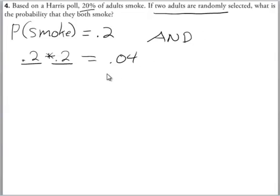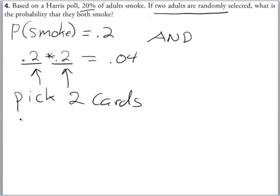Now, this technique works for both independent and dependent data. So this data is independent. The probability that the first one smokes doesn't influence the probability that the second one smokes. A dependent data question would be pick two cards from a deck. What's the probability that they're both red?